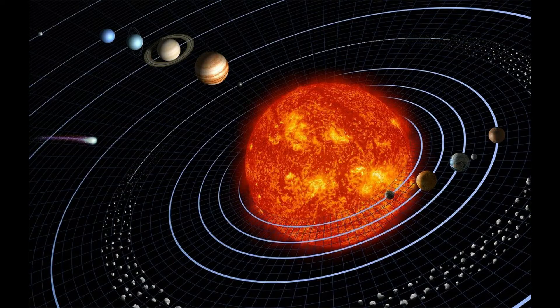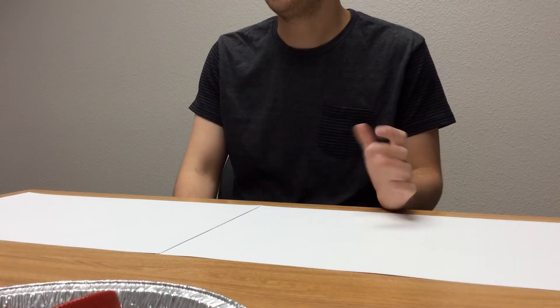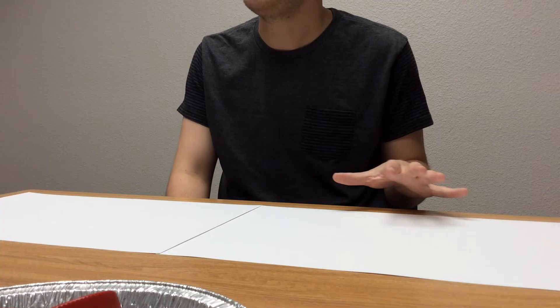But the Earth isn't alone in the solar system. There are also seven other planets that circle the Sun, plus Pluto. You can do this along with me if you'd like — there are lots of ways to build your solar system. I have two long pieces of paper here; you can use any strip of paper that you want.